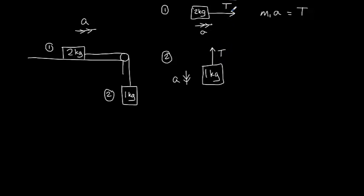That T is going to be the same as the T we found earlier, because it's one rope. And we know that there is a weight acting on the one kilogram mass, m2g. Because this is mass 2, let's call it m2.